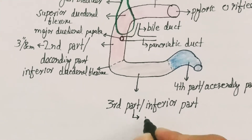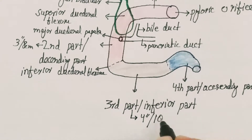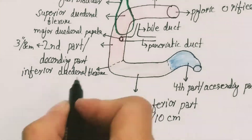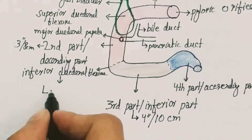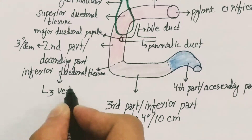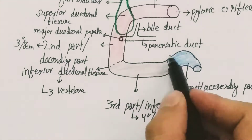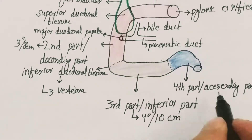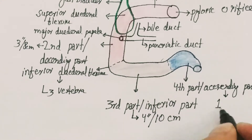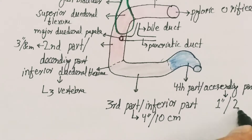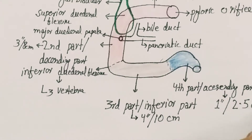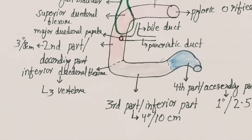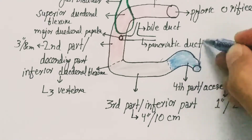There is also a minor duodenal papilla, situated somewhat superior to the major duodenal papilla. The inferior duodenal flexure lies at the level of the third lumbar vertebra. The length of the third part of the duodenum is about four inches or ten centimeters, and the length of the fourth part is about one inch or 2.5 centimeters.